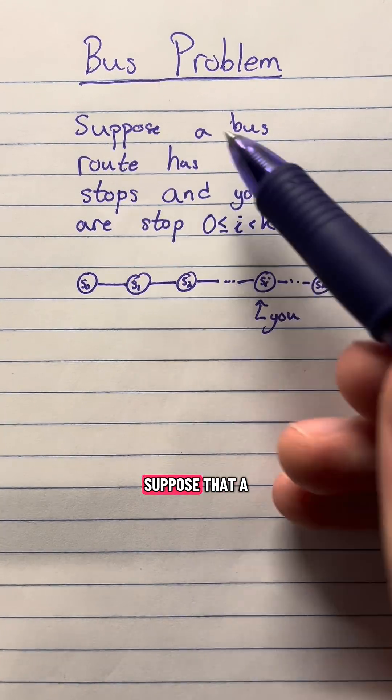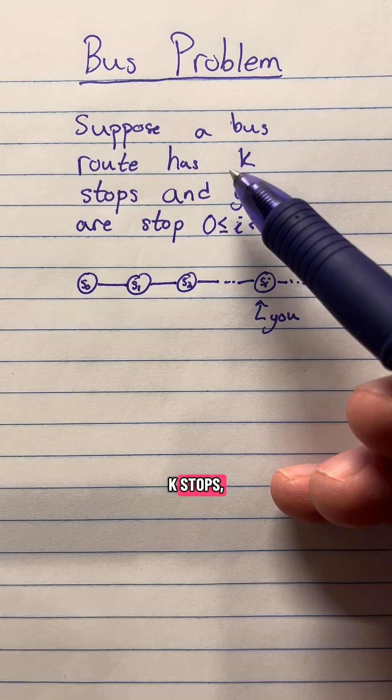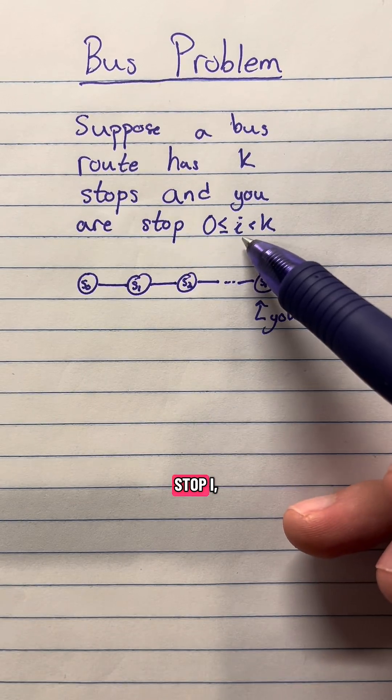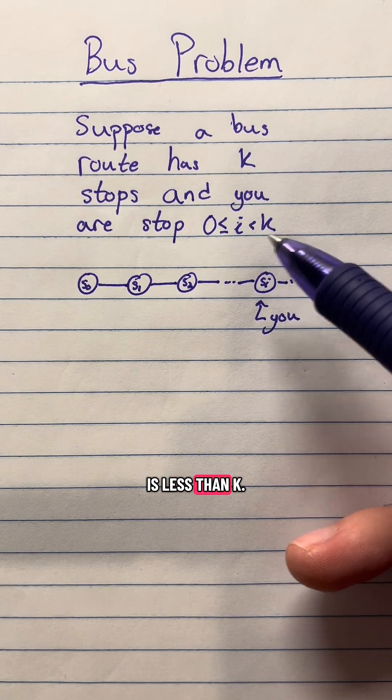If we were to formalize this, suppose that a bus route has k stops and you want to get off at stop i, where i starts at zero and is less than k.